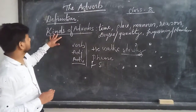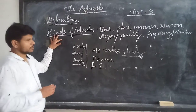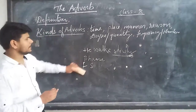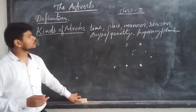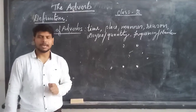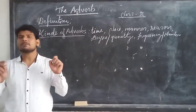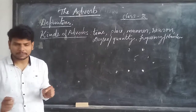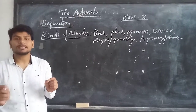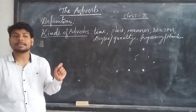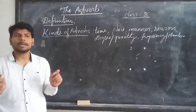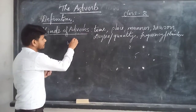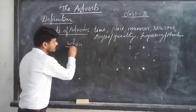Today we will be talking about the kinds of adverbs. There are a number of kinds of adverbs which we will be talking about. The first one is adverb of time. Adverb of time are adverbs which tell us when the action has taken place or when the action was performed. Normally, adverb of time will always answer the question 'when'.